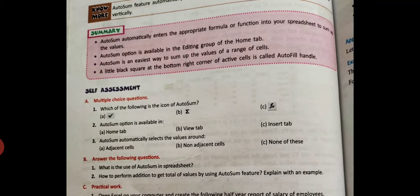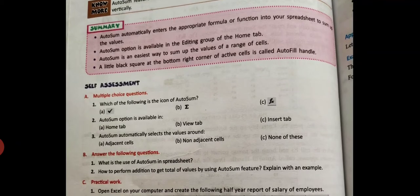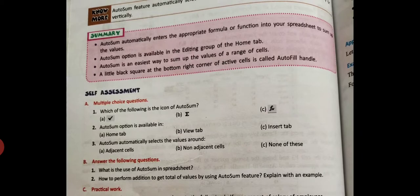Then, the little black square at the bottom right corner of the active cell is called AutoFill Handle. Whenever we enter any formula in a cell and after giving enter, we see a small square at the right corner of that cell. That is known as AutoFill Handle.